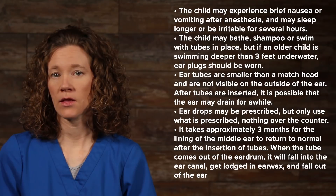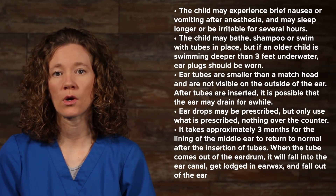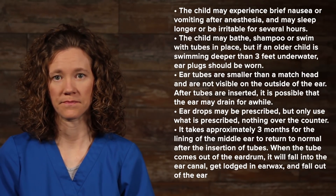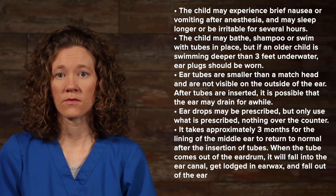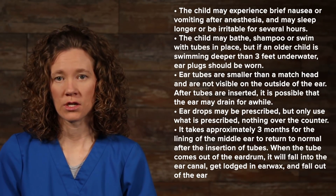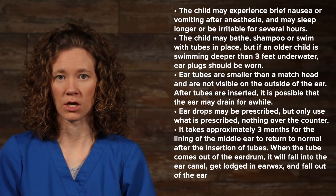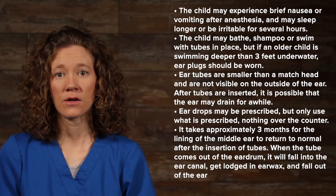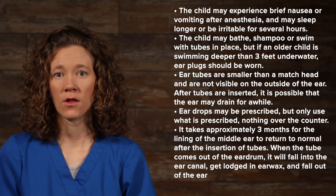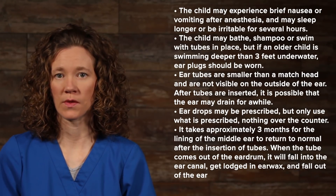It takes approximately three months for the lining of the middle ear to return to normal after the insertion of tubes. When the tube comes out of the eardrum, it will fall into the ear canal, get lodged in earwax, and fall out of the ear, or be removed with the earwax at checkup. It is very rare for it to fall into the middle ear space, but if it does, it can be removed with a brief procedure without causing harm.